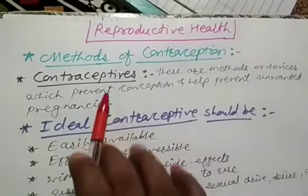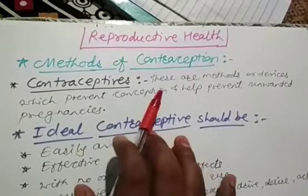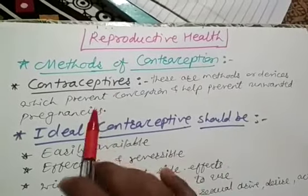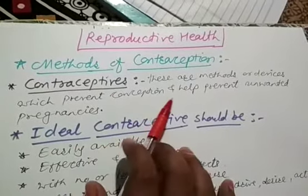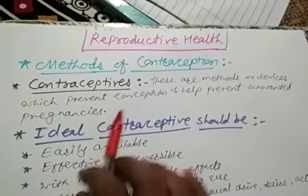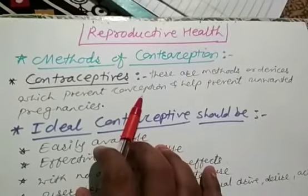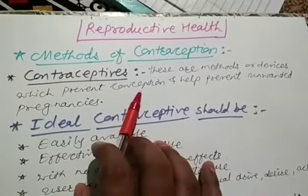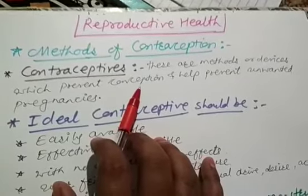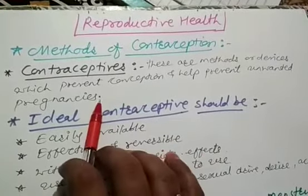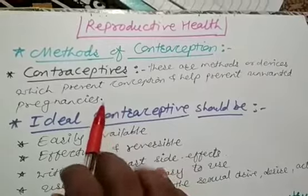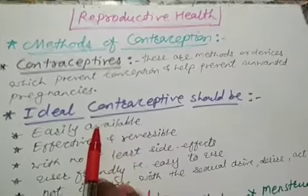So what is a contraceptive? These are the methods or devices which prevent conception and help prevent unwanted pregnancies. They are widely used by many people to avoid unexpected or unwanted pregnancies. We will now see the different types.